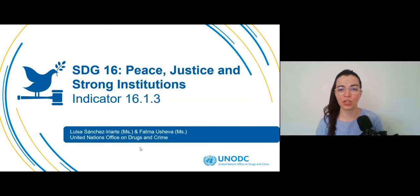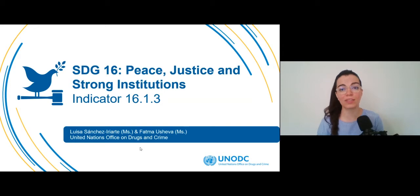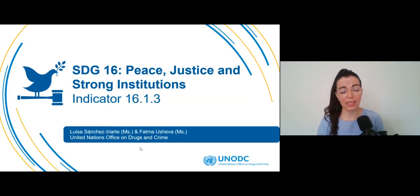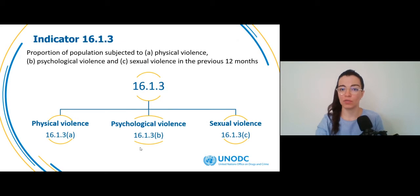The United Nations Office on Drugs and Crime is the international lead organization on crime and criminal justice statistics. On such basis, UNODC has been identified, alone or jointly with other UN agencies, as custodian agency for 16 indicators to monitor relevant targets of the Sustainable Development Goals, mainly for Goal 5, 11, 15, and 16. This presentation focuses on the work of UNODC related to Indicator 1613, and it will be particularly useful for agencies involved in the data collection, estimation, and reporting of this indicator.